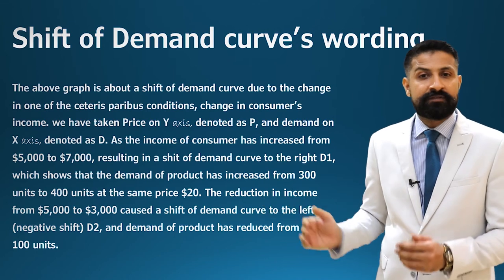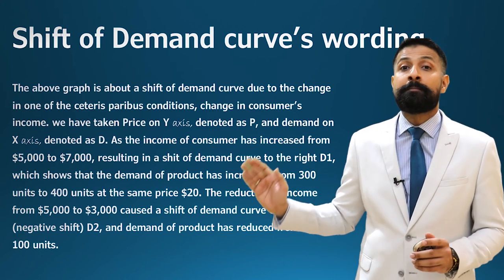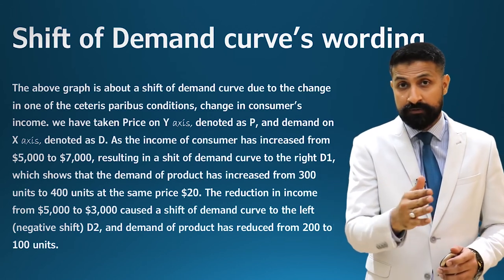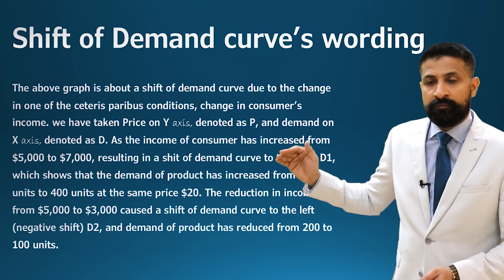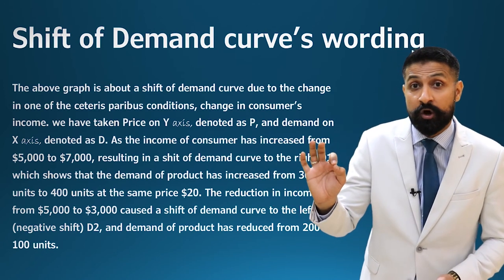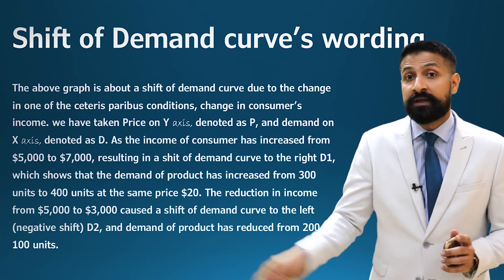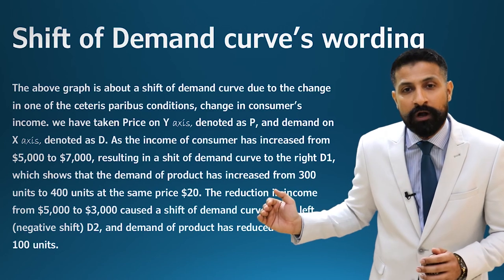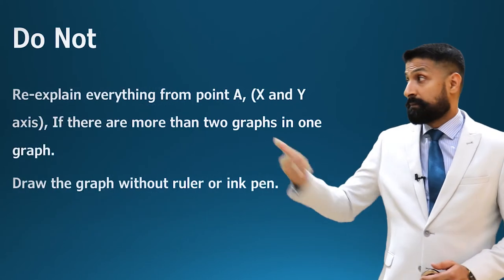The demand of the product increased from 300 to 400 at the same price of 20 dollars — there is no change in price, only the demand increased due to the change in income. Conversely, a reduction in income from 5,000 to 3,000 causes a shift of the demand curve to the left — D2 — and the demand of the product reduced from 200 to 100. That is a complete explanation of the shift of demand curve.